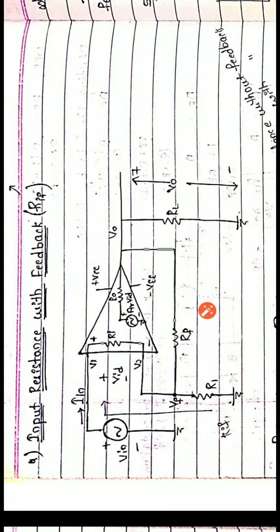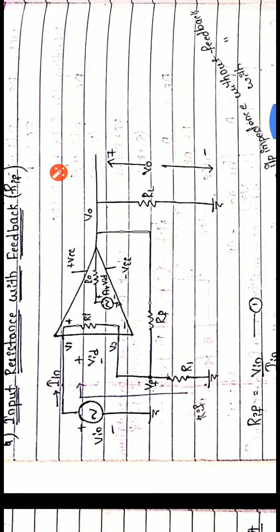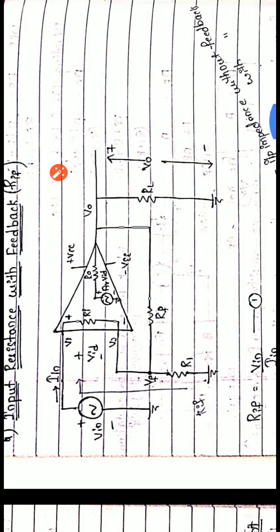Now we will start with the next topic. In the previous session we discussed the closed-loop voltage gain of a non-inverting amplifier. Now we will start with the second topic, which is input resistance with feedback, referred to in short as RIF.